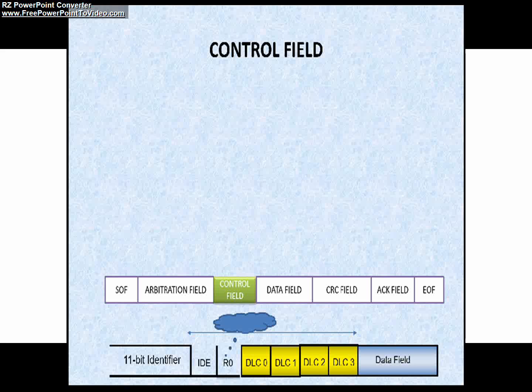The IDE bit stands for identifier extension and it is always dominant bit for the standard data frame. DLC stands for data length code. You can see in this picture, it is of 4 bits.